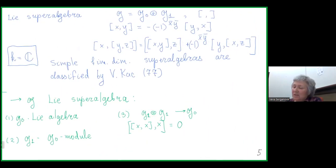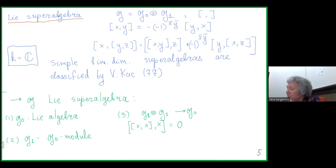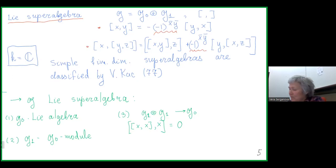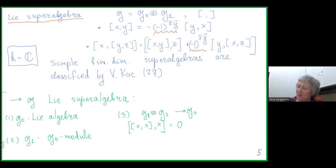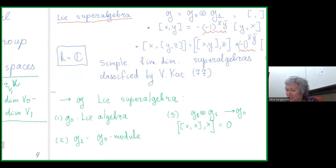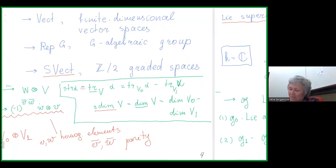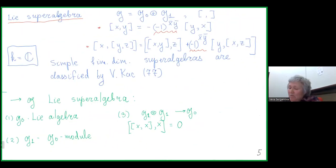Now my next example: I will consider the Lie superalgebra. This is a finite-dimensional Z₂-graded vector space with a bracket satisfying two identities. Compared to the usual Lie algebra case, you see sign changes in the identities coming from the braiding defined on the previous slide. We will work over ℂ, or any algebraically closed field of characteristic zero.